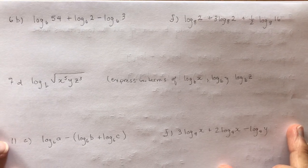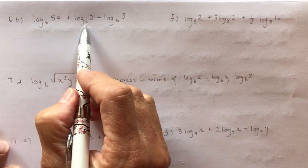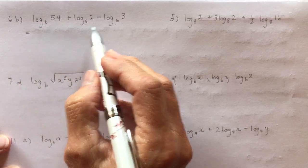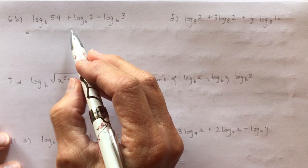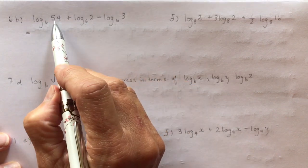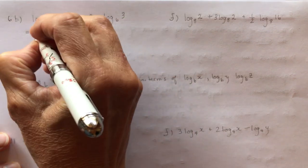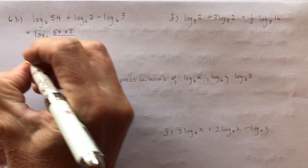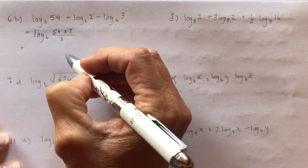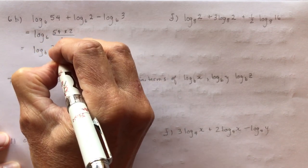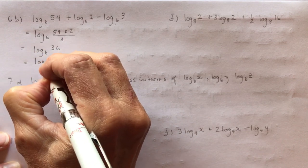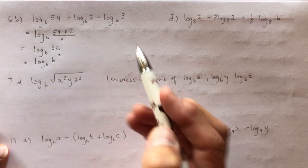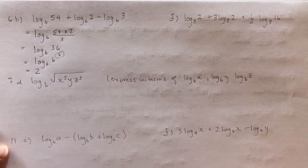Let's look at the next set. First, check that they're all base 6 — always do that, because someone might mix bases and you can't apply the log rules. They're all base 6, so I have 54 times 2 divided by 3. That's log base 6 of 36, and since 36 is 6 squared, what do I raise 6 to, to get 36? The answer is 2.